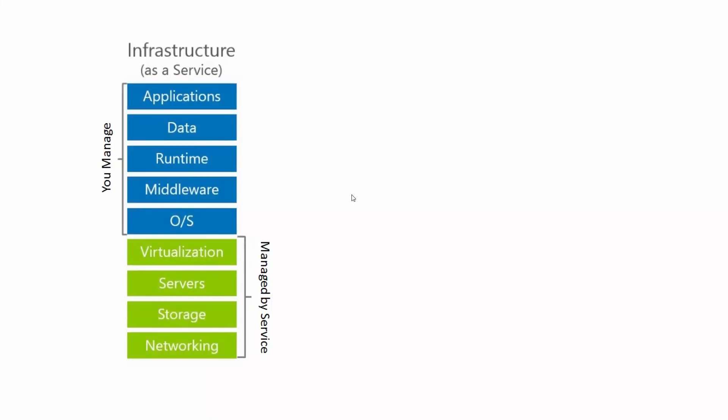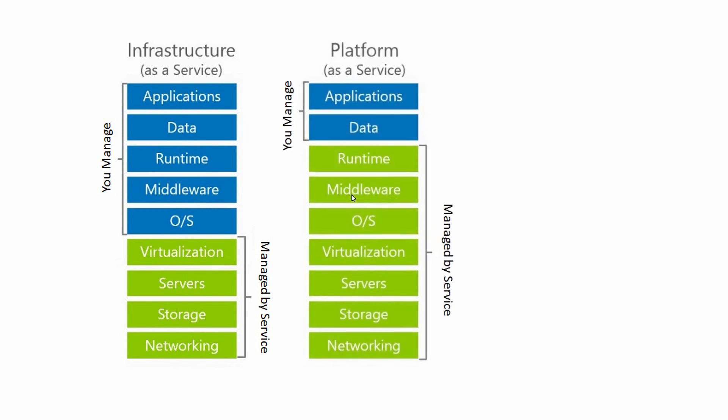We have different service models. The first is Infrastructure as a Service (IaaS), where we maintain the data and everything in the infrastructure. The next is Platform as a Service (PaaS), which is for the developer community. It makes it easy to deploy web applications, and developers can focus on the data while the cloud handles security, storage, and the rest of the server.